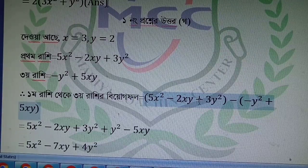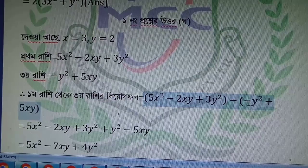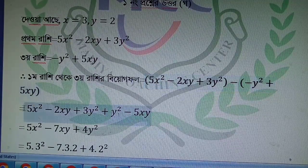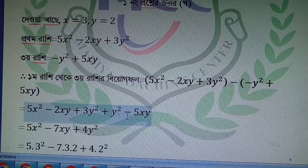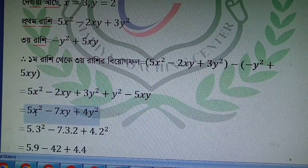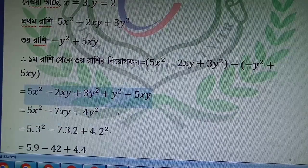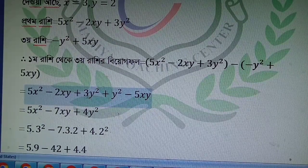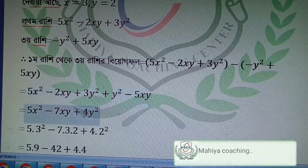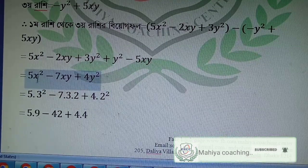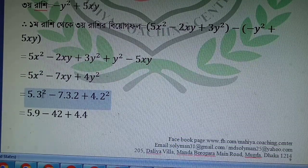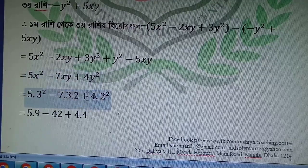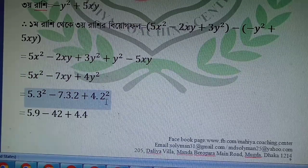5x² minus 2xy and minus 5xy gives minus 7xy. Then minus 3y² and minus 4y² — combined with 3y² gives minus 7y².